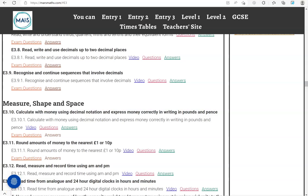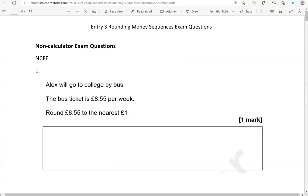In this video, we'll go through exam questions that cover the criteria round amounts of money to the nearest pound or ten pence. You can locate the questions on the maths.com website under entry 3. The questions come from different exam boards. We'll start with the non-calculator questions and then move to the calculator questions.